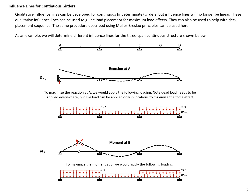The Mueller-Breslau principle also applies to continuous girders or indeterminate structures, though influence lines are no longer linear. We can still use them to guide where loads should be placed to cause maximum or minimum force effects. For example, on a 3-span continuous structure, releasing the vertical constraint at support A and displacing it upward shows the deflected shape oscillating at supports B, C, and D, indicating where to apply loads to maximize or minimize the reaction at A.